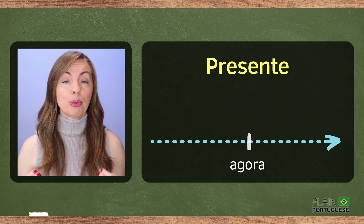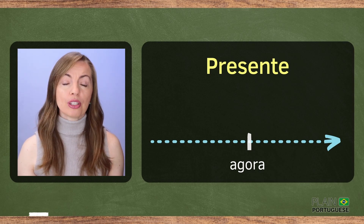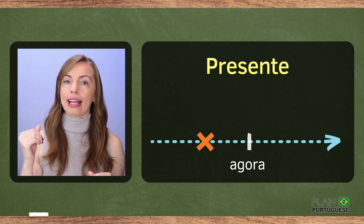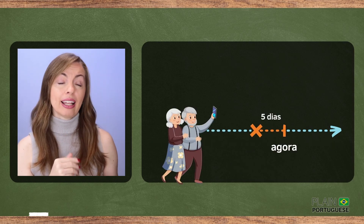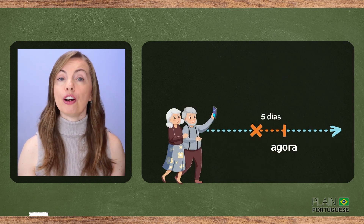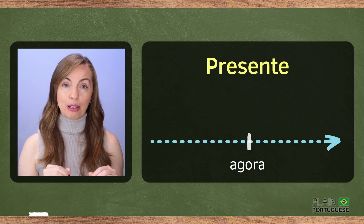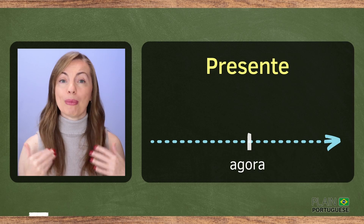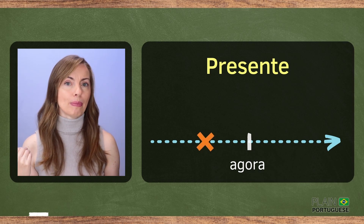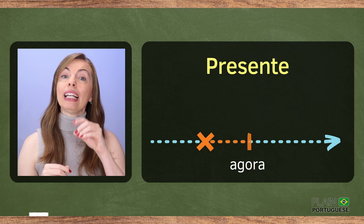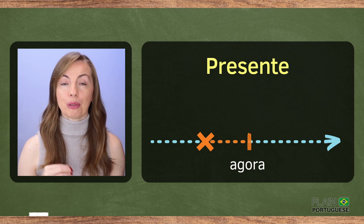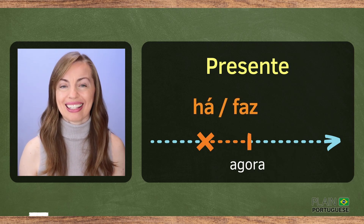In the present: in English, the present perfect tense is used to describe an action that began in the past and continues, as in 'They have been in Brazil for five days.' But in Portuguese we use the present simple — yes, we do — in combination with the verbs há or faz.